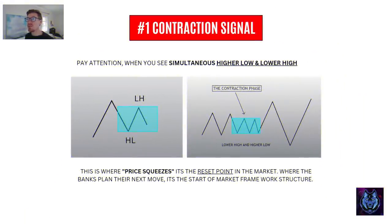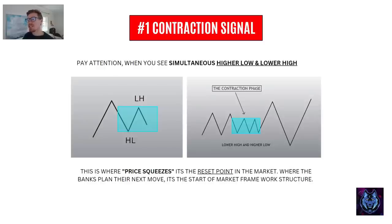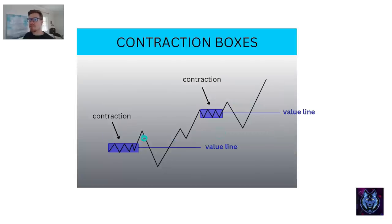Pay attention when you see simultaneous higher lows and lower highs. The market will get to a point where it creates this squeezing of price — you'll see a higher low and a lower high. You mark a box around this area. This becomes the contraction phase signal. This is the reset point in the market where the banks plan the next move — it's the start of the market framework structure. We draw these boxes around them. These are called contraction boxes.